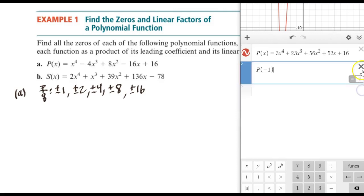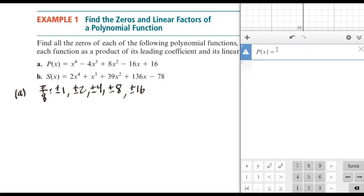And I still have the results from before in the last video. Let's go ahead and delete these. So I'm going to enter in a new function. So we still have the function P(x). But in this case, we have x to the fourth minus 4x to the third plus 8x squared minus 16x plus 16.